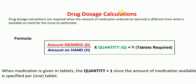Hello everyone. In this lecture today I'm going to talk to you about drug dose calculations. I'm going to give you four different examples showing drug dose calculations. Drug dose calculations are required when the amount of medication ordered or desired is different from what is available on hand for the nurse or the doctor to administer. The formula is: amount desired (D) divided by amount on hand (H), times quantity (Q).